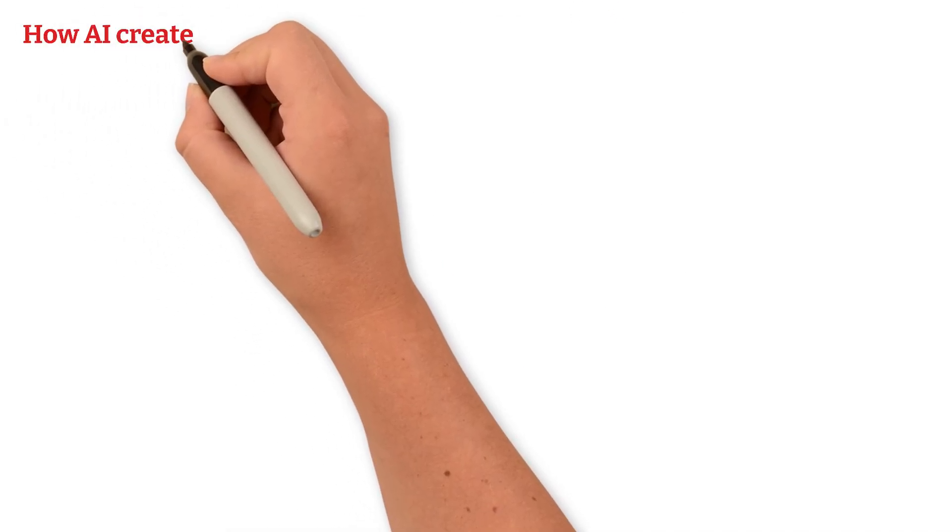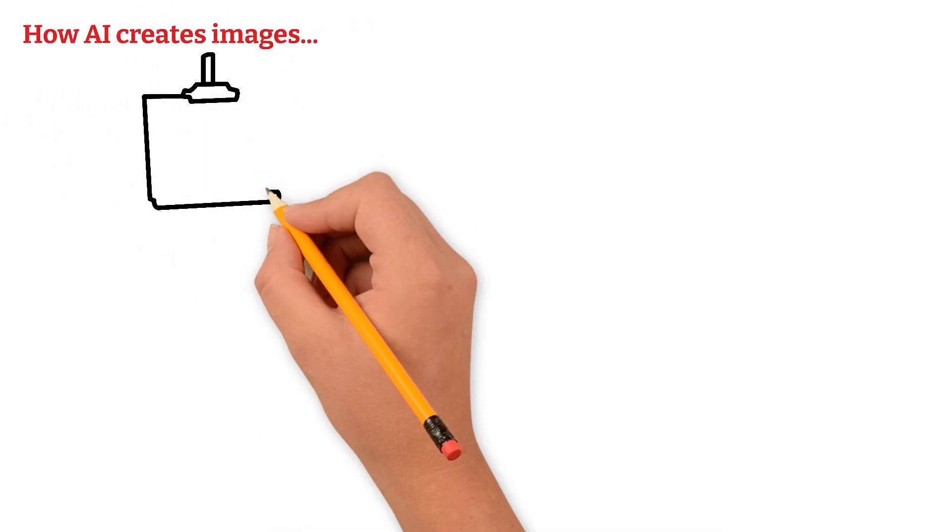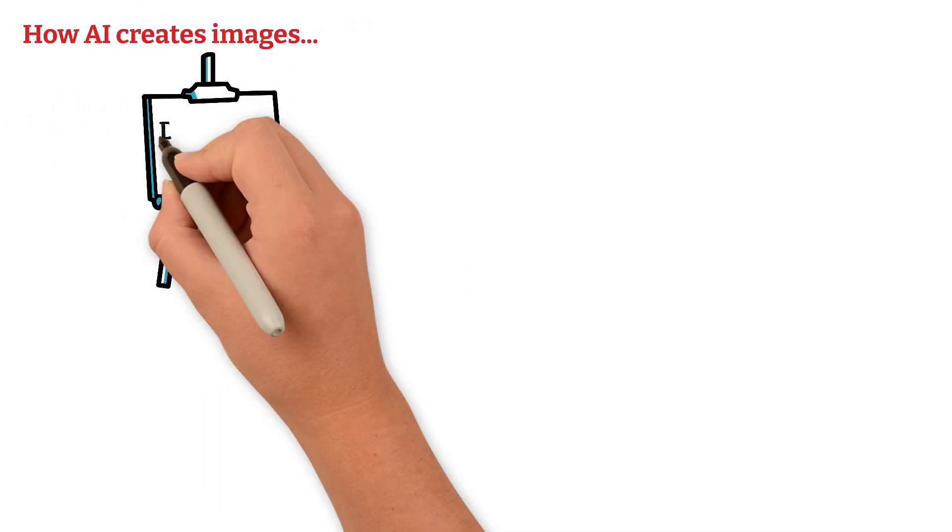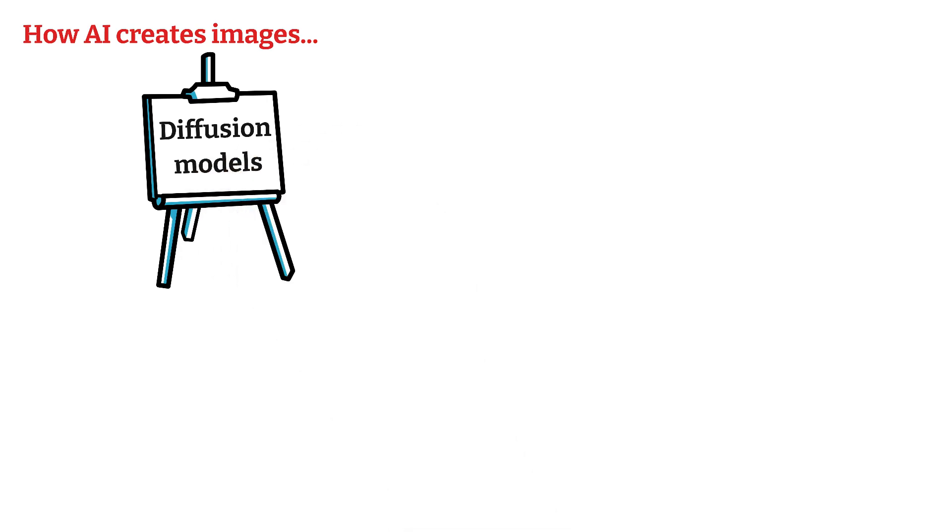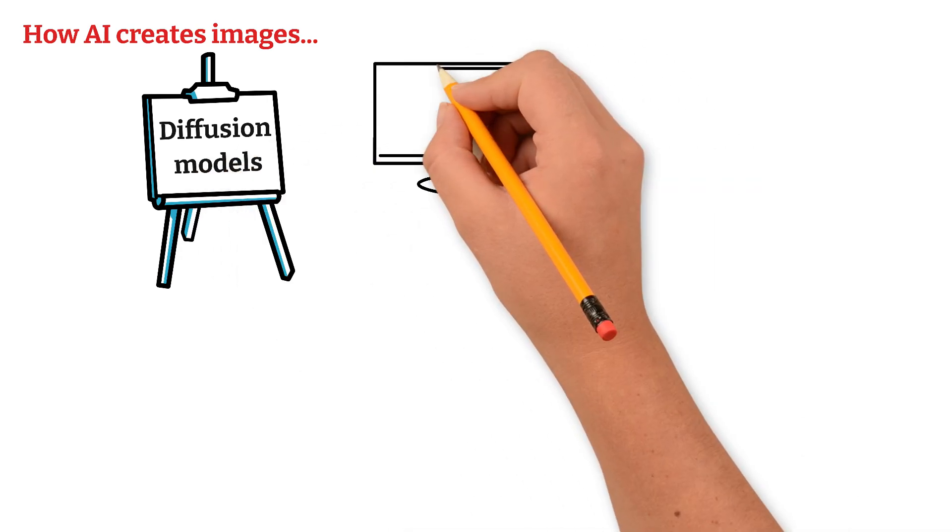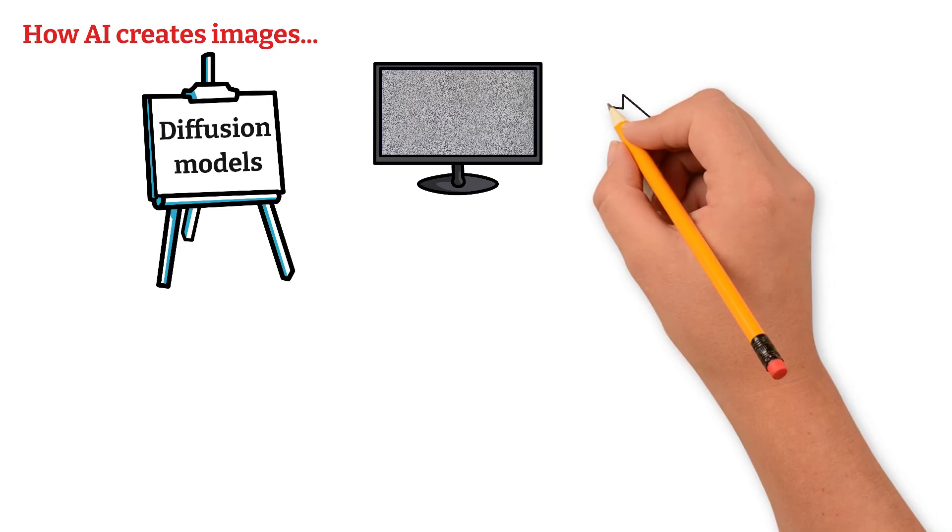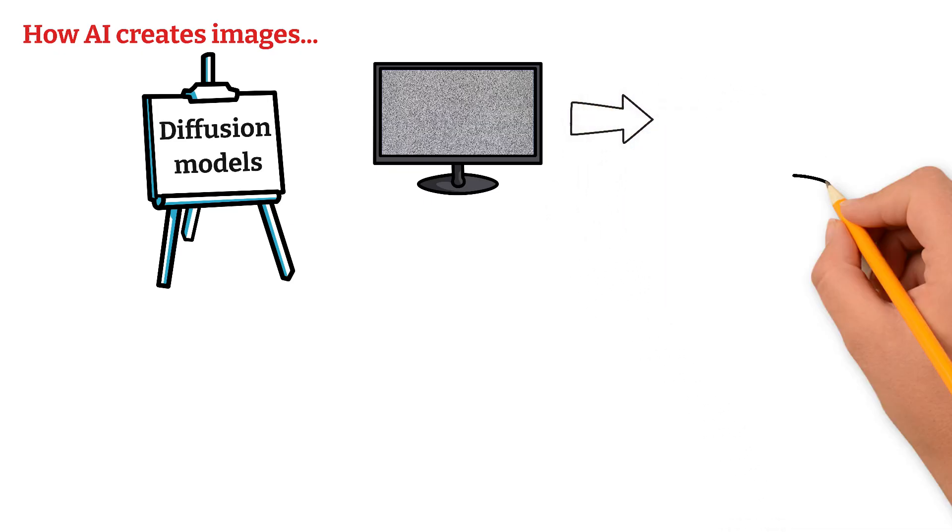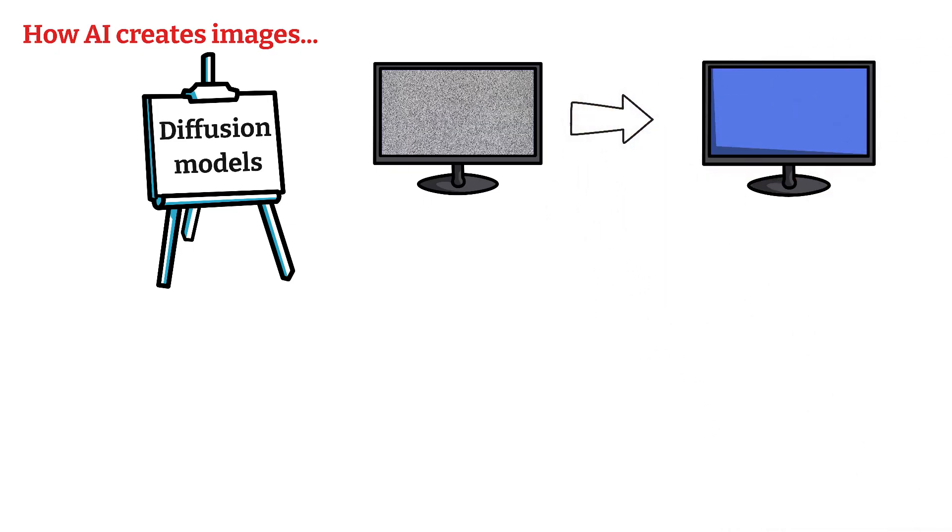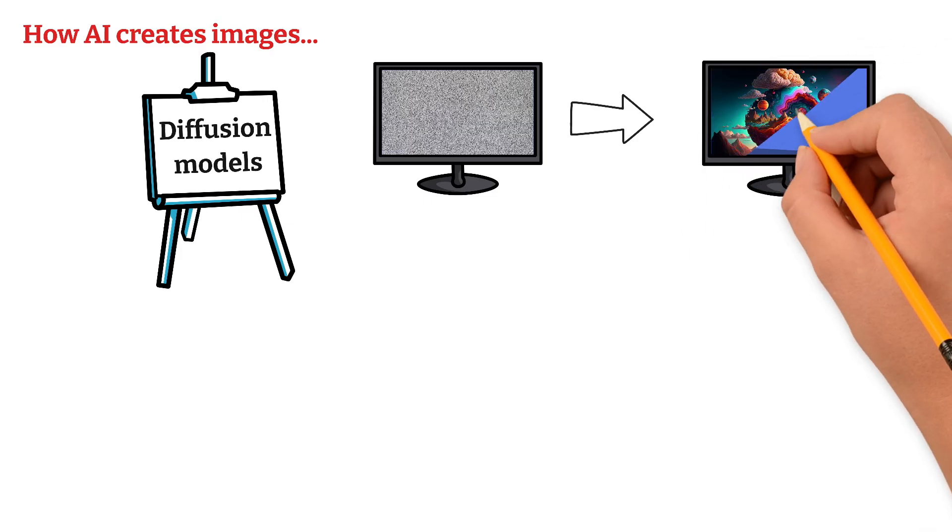How AI creates images. AI can also generate images using something called diffusion models. Here's how it works. First, the AI starts with random noise, like static on a TV screen. Then, step by step, it removes the noise and turns it into a clear picture based on your prompt.